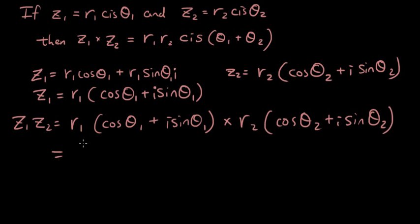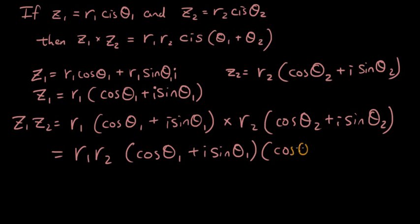As you guys know, with multiplying, you can change the order around. It still gives you the same result. So I'm going to bring r1 and r2 to the front. And then that's going to be multiplied by cos θ1 plus i sin θ1, which is going to be multiplied by cos θ2 plus i sin θ2.